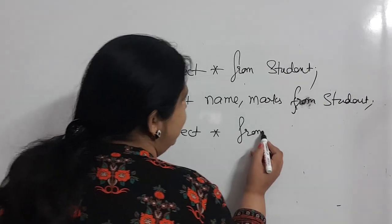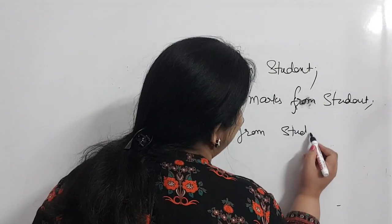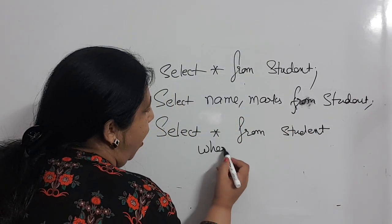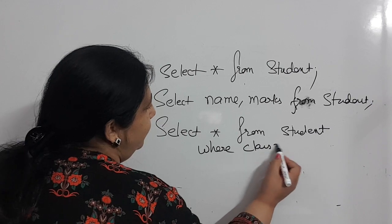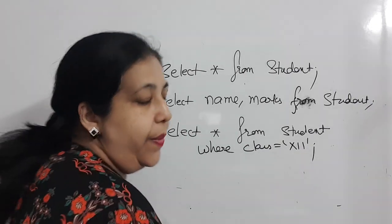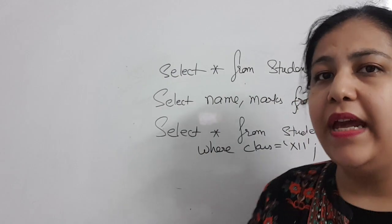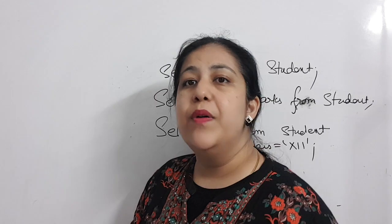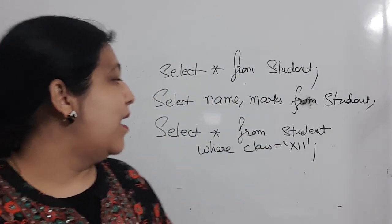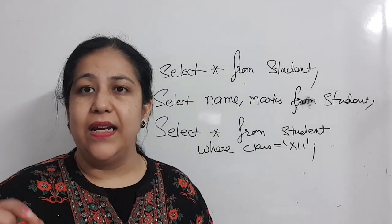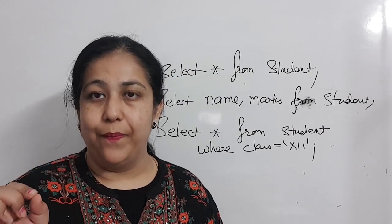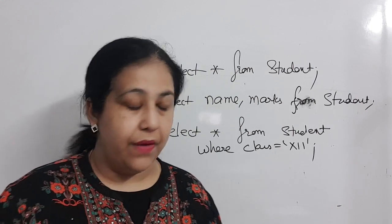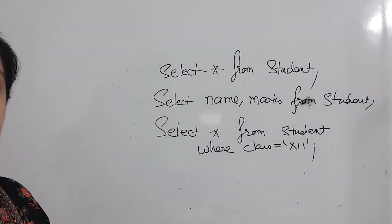If I say show all the details but only for class 12 students, we use the WHERE clause: SELECT * FROM student WHERE class = 12. The purpose of WHERE is to give a condition. This is the normal WHERE condition.